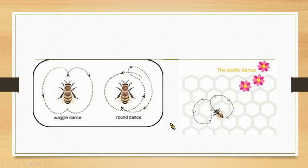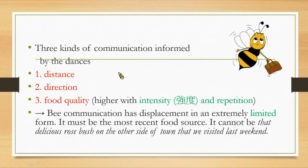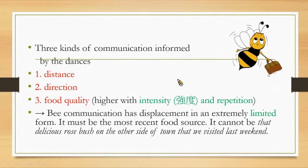Here you can see the three kinds of dances in this picture. The three kinds of communication informed by the dance are distance, direction, and food quality. They show different degrees of intensity and repetition. The bees' communication has displacement, but in an extremely limited form.